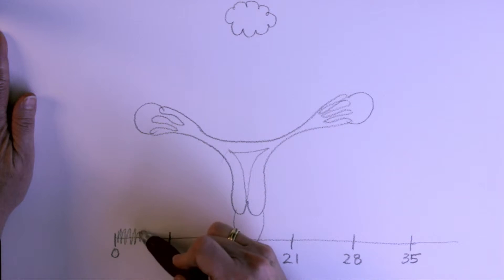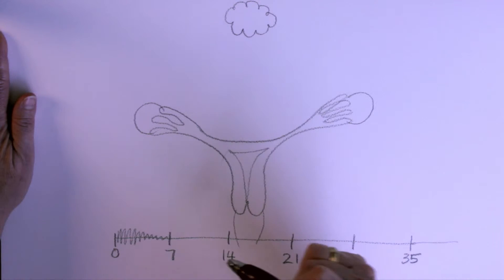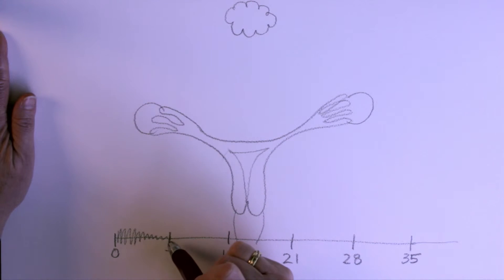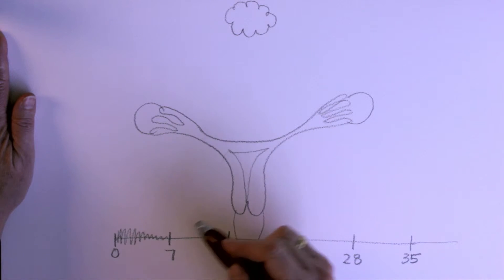Day 0 is always the first day that you bleed, and so you bleed for that first little part. It sort of doesn't really matter how long you bleed for, whether it's 2 days, or 5 days, or 7 days, or 10.